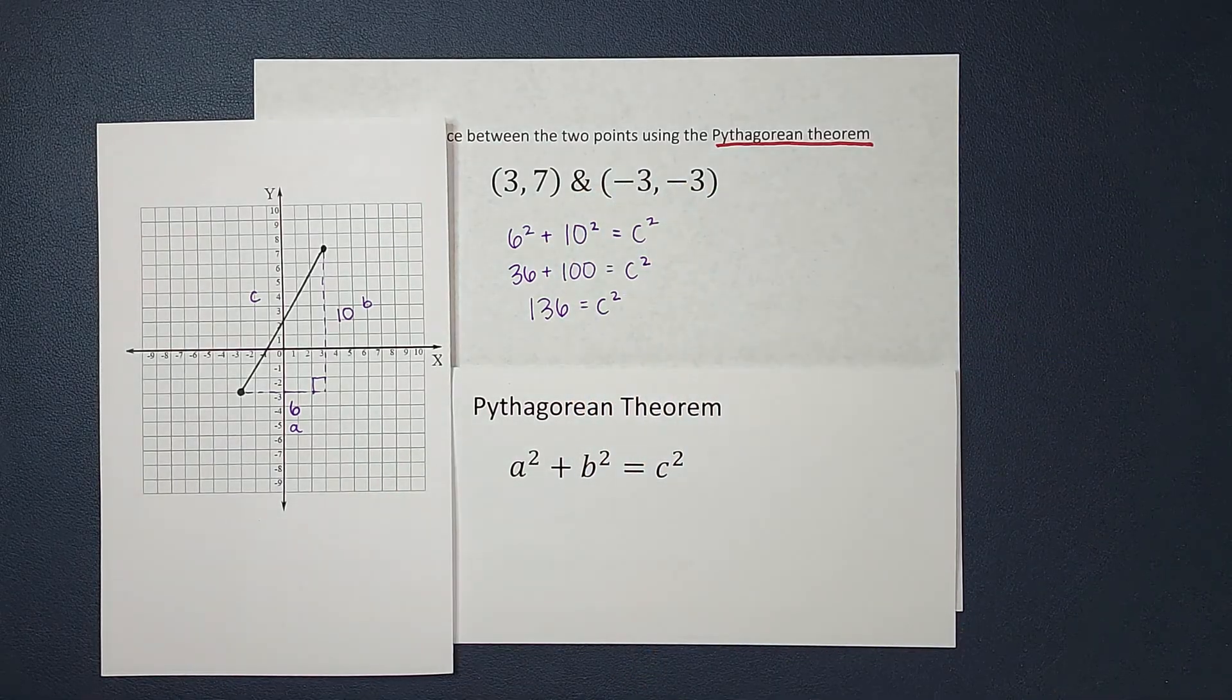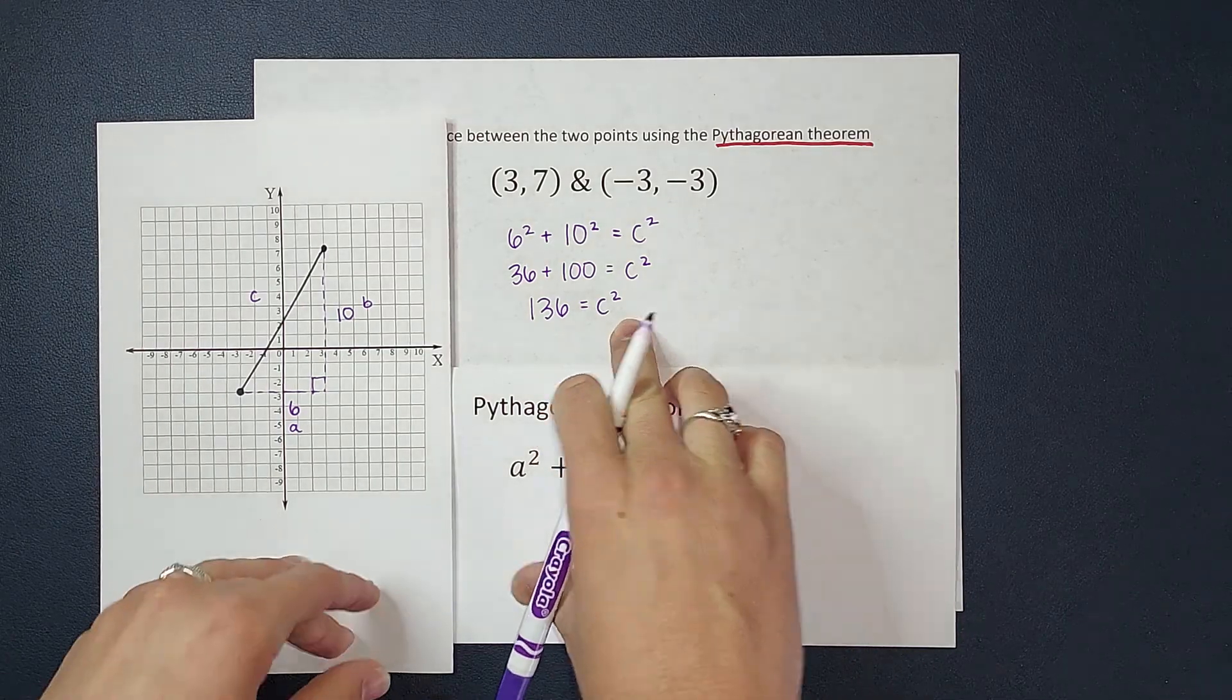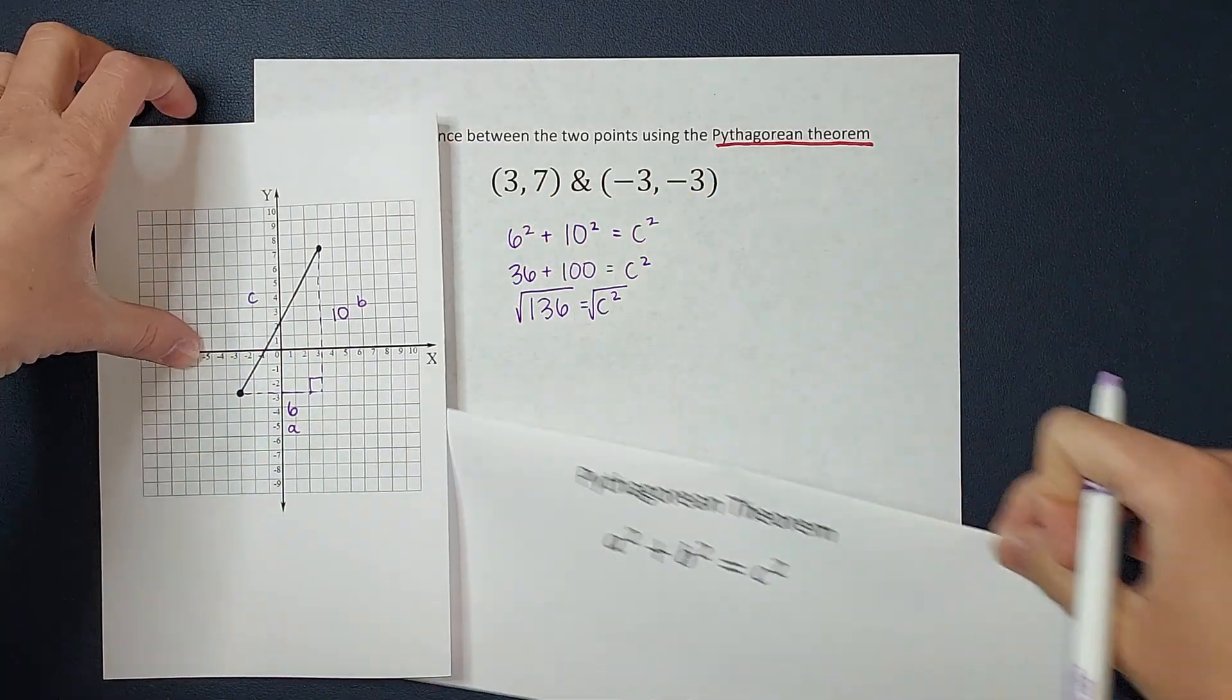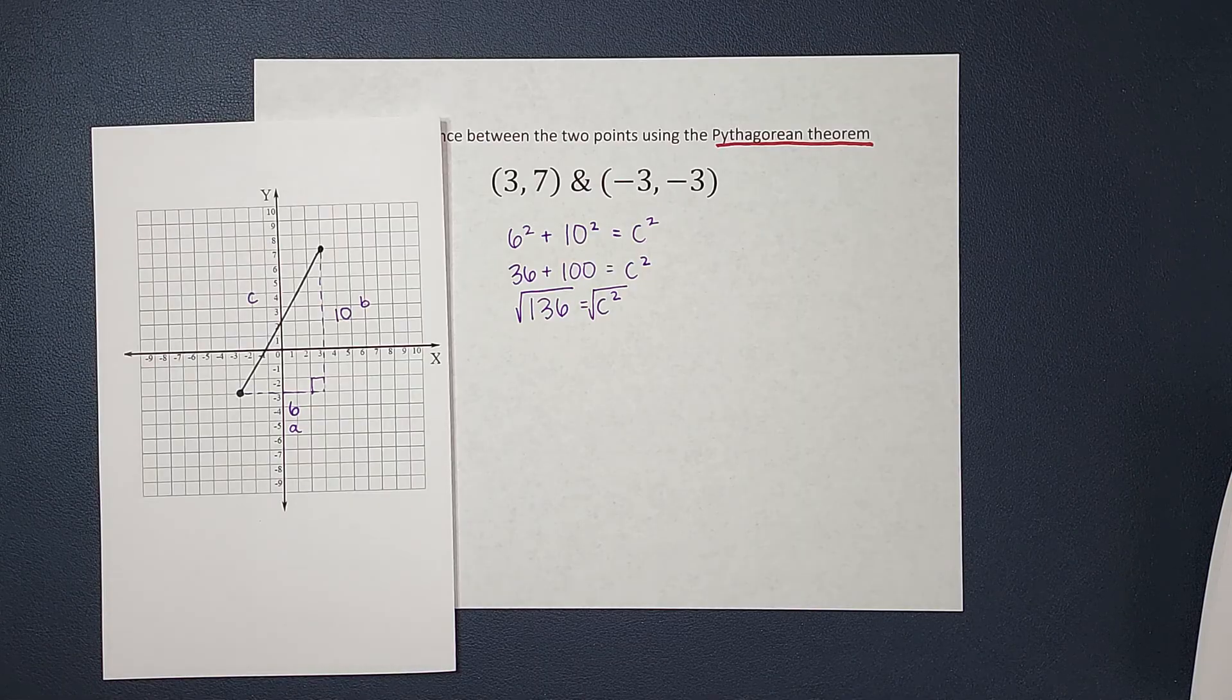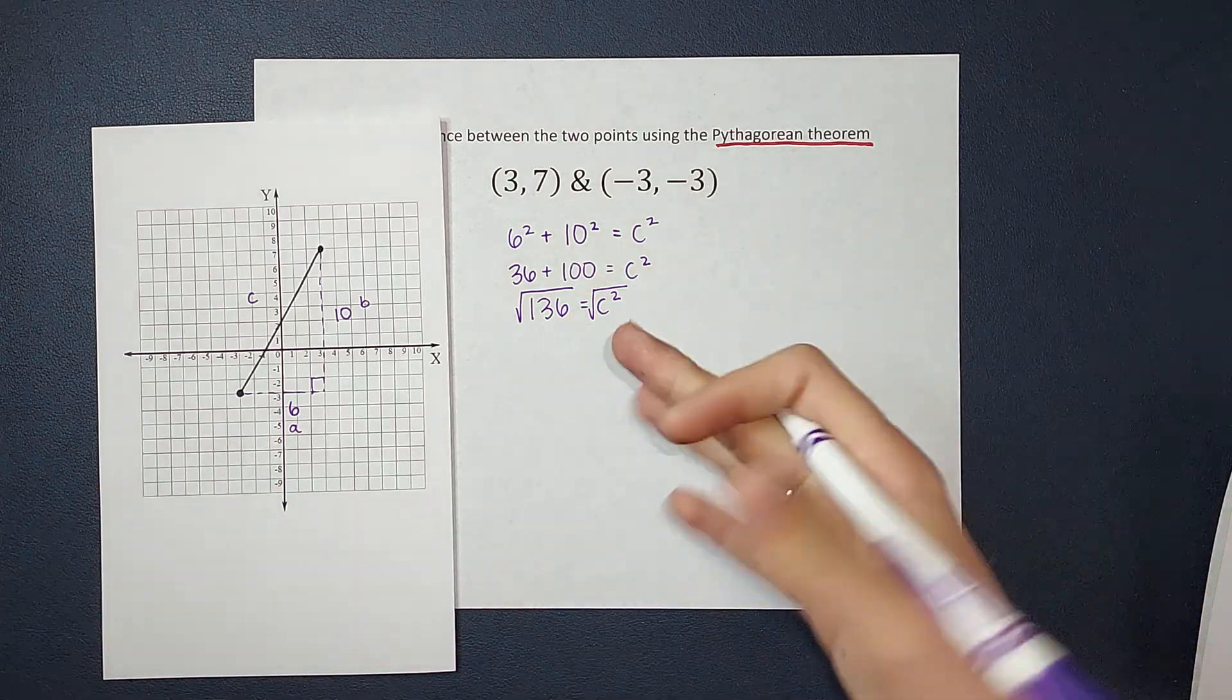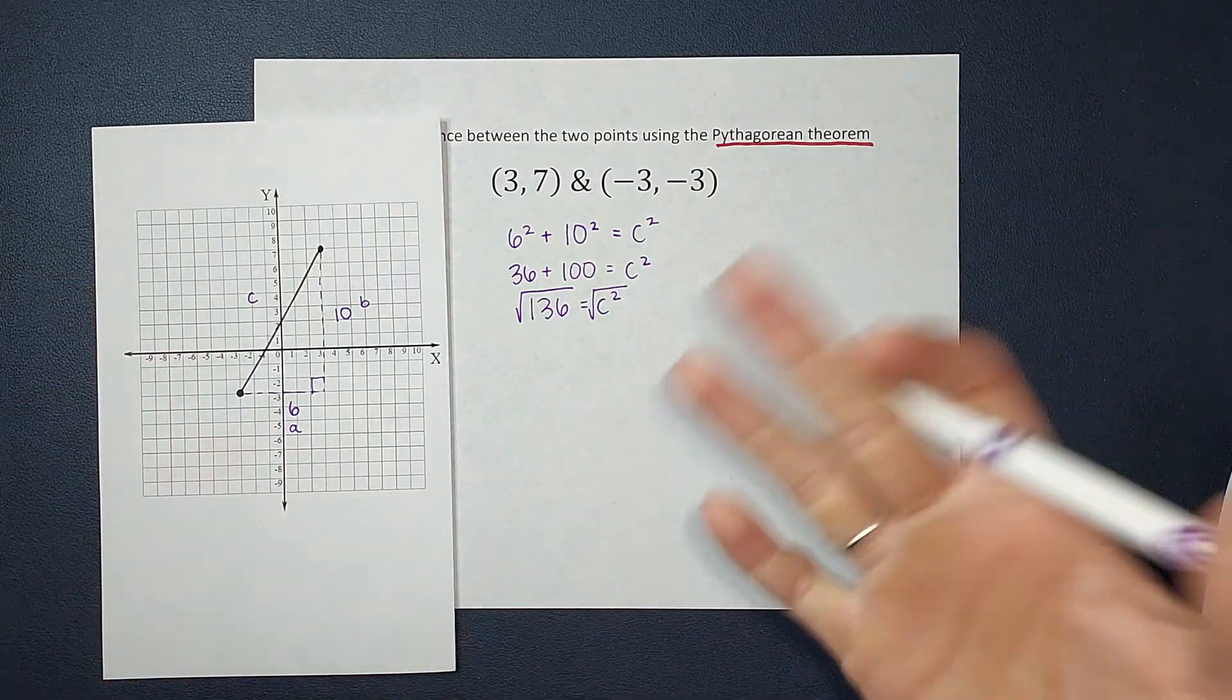c is almost alone, but I want to get rid of that squared. To get rid of that, I'm going to take the square root of both sides. Now the square root of 136, if you stick that in your calculator, it's not going to be very pretty. So what we're going to do is we're just going to try and simplify this radical as much as we can without an ugly decimal.